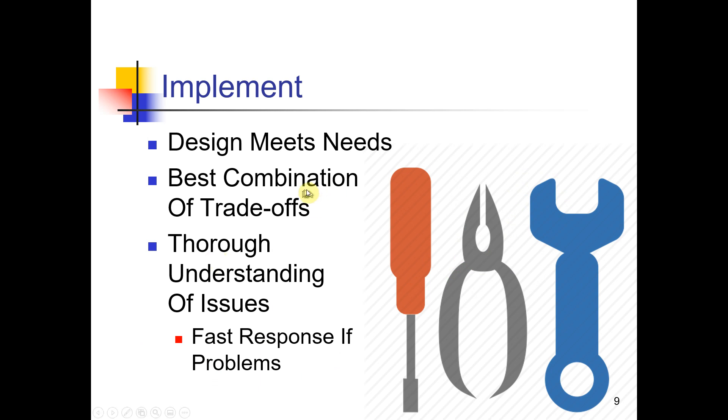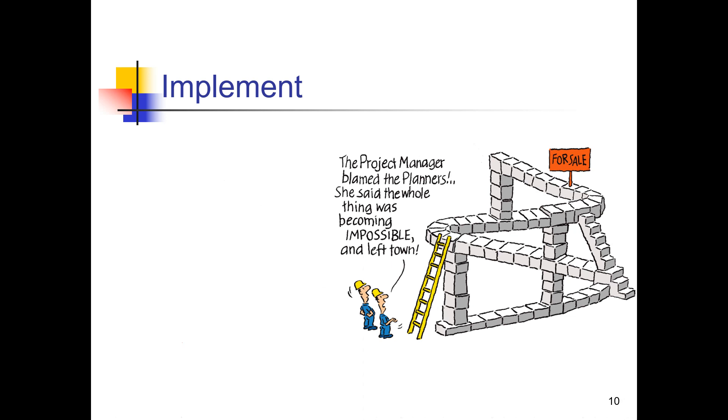So implementation: best combination of trade-offs between the design, the needs, and thorough understanding of issues. At this stage, things can still go wrong. What you thought would work didn't—that's why you prototype. In a shortened timeline, you test your ideas. If you're uncertain they'll work, you test them and then make sure they'll work.